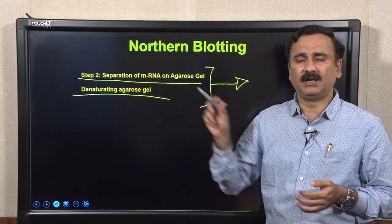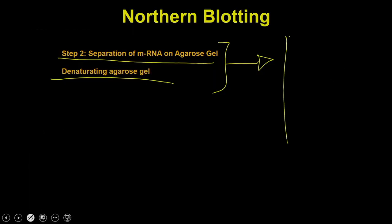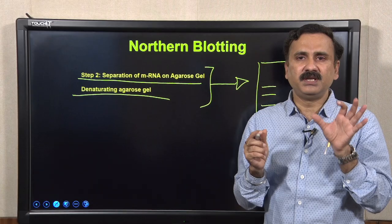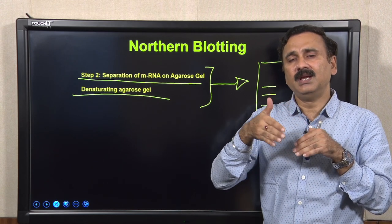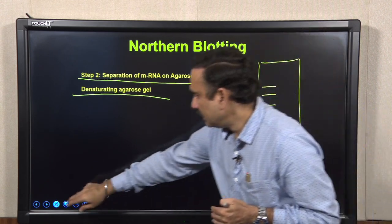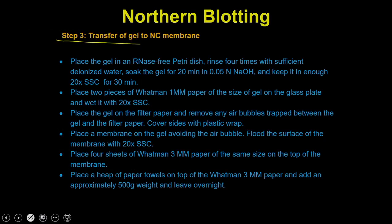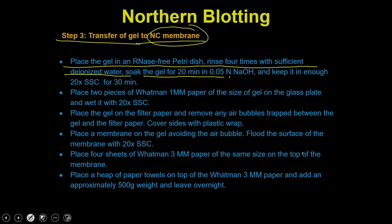After resolution, you will have the agarose gel with individual messenger RNAs completely resolved from top to bottom. The next step is to transfer the messenger RNA from the agarose gel onto the nitrocellulose membrane. What you have to do is place the gel in an RNA-free petri dish, rinse it four times with sufficient deionized water, soak the gel in 0.05 N NaOH for 20 minutes, and keep it in 20X SSC for 30 minutes.